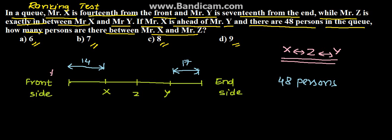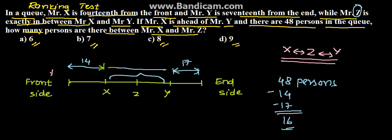We have 14th from the front and 17th from the end. So 14 plus 17 equals 31, and 48 minus 31 leaves 16. Wait — the distance between X and Y from the front: X is at 14th, Y is at 32nd from front (48 − 17 + 1), so this distance is 16. Z is exactly between X and Y, so this distance is split into 8 and 8.